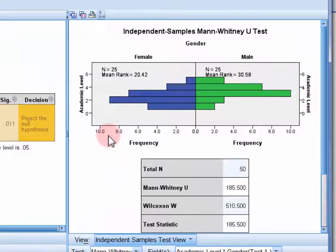Now the graph at the top here indicates that females tend to be clustered further down the scale of academic levels than males. And the males have a higher mean rank, indicating that they appear more frequently in the higher ranked academic positions.